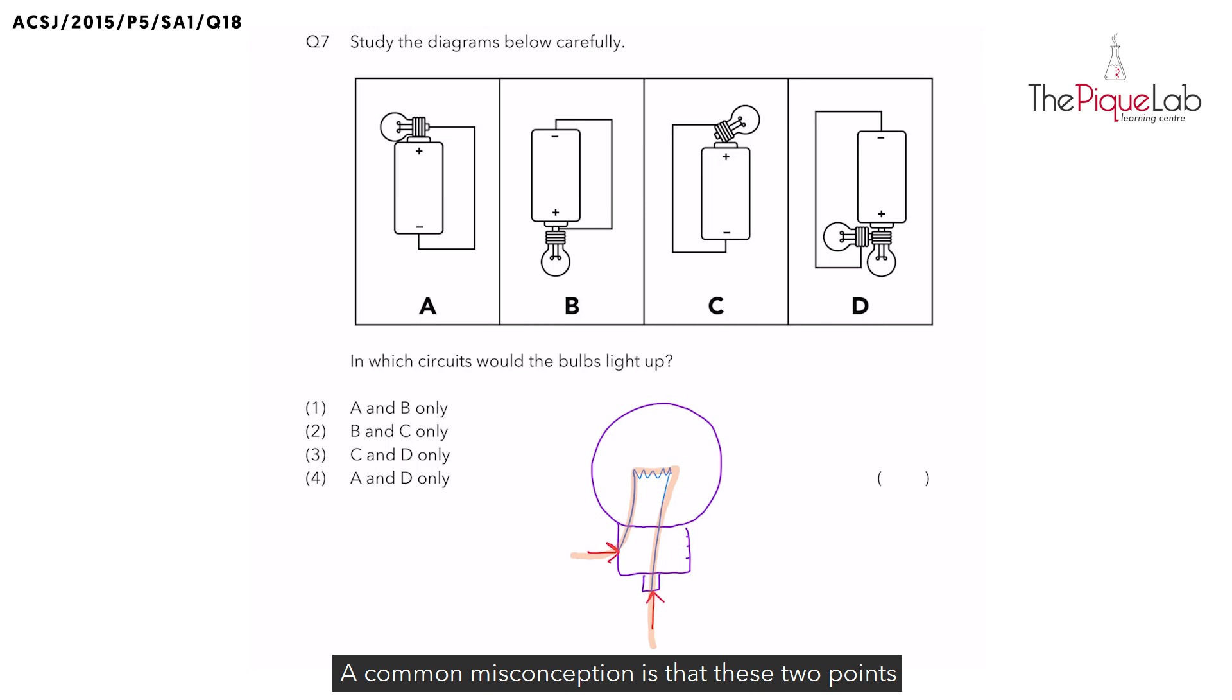A common misconception is that these two points must be joined with wires for the bulb to light up. This is not true. It is possible for us to place the bulbs in direct contact with the battery, like in option A, or even the bulbs touching each other, like in option D.